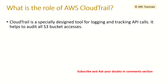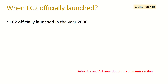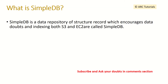What is the role of AWS CloudTrail? CloudTrail is a specially designed tool for logging and tracking API calls. It helps us audit all the S3 bucket accesses. When was EC2 launched? It was launched in the year 2006.